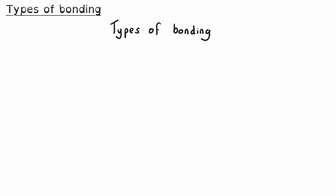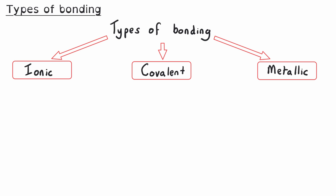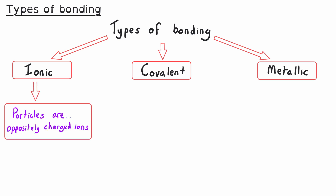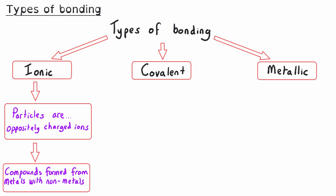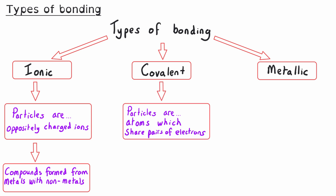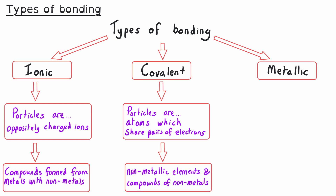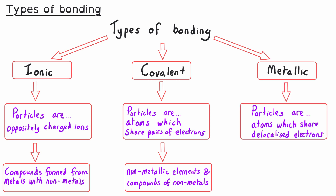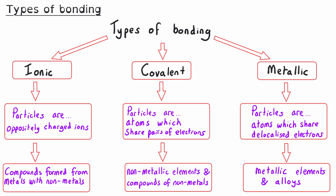There are three different types of strong chemical bonds: ionic, covalent and metallic. For ionic bonding, the particles are oppositely charged ions, and it occurs in compounds formed when metals are combined with non-metals. For covalent bonding, the particles are atoms which are sharing pairs of electrons, and it occurs in most non-metallic elements and in compounds made of non-metals. In metallic bonding, the particles are atoms which share delocalized electrons, and this type of bonding occurs in metallic elements and in alloys.